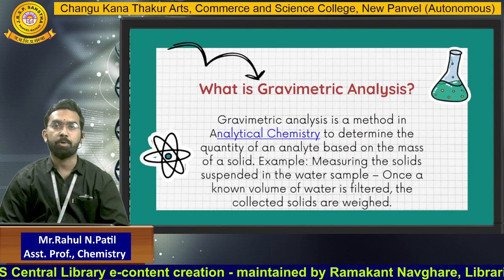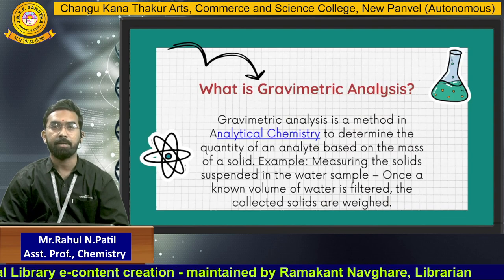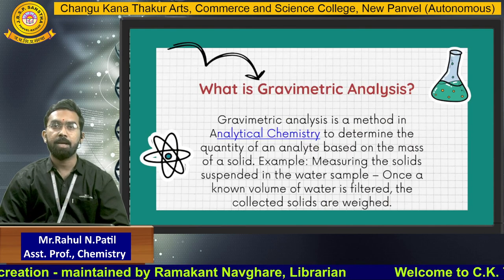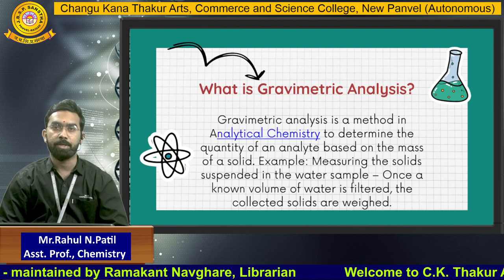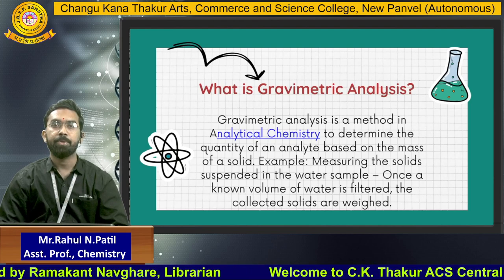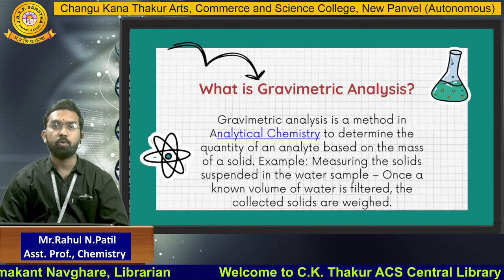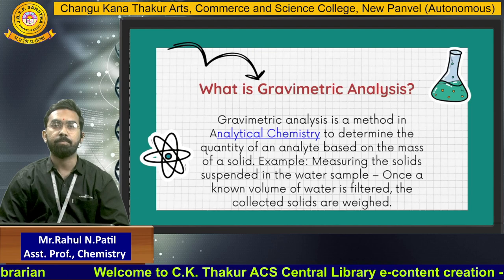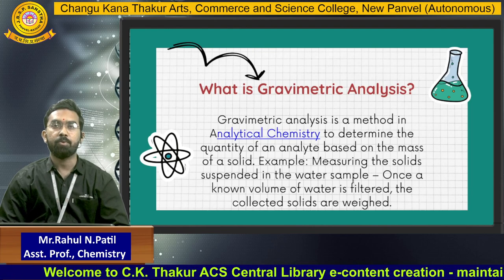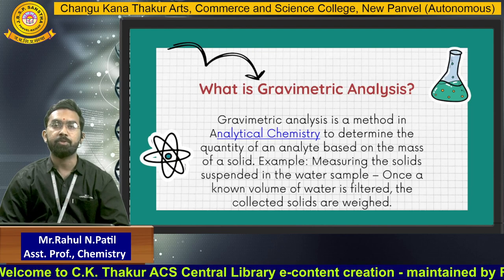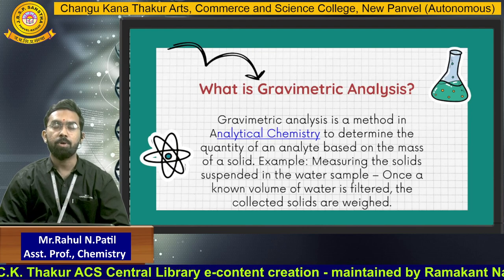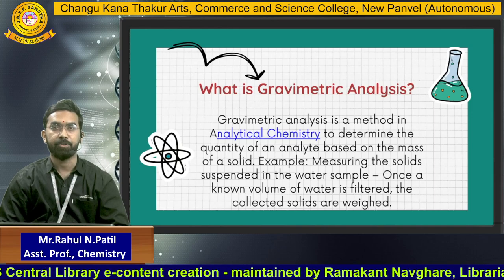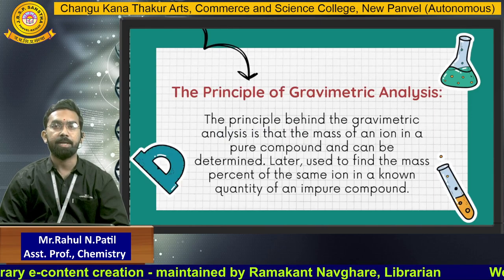What is gravimetric analysis? Gravimetric analysis is a method in analytical chemistry to determine the quantity of an analyte based on the mass of a solid. For example, measuring the solid suspended in a water sample — once a known volume of water is filtered, the collected solids are weighed. Using gravimetric analysis, we note down how much weight, that is the quantity of the product.